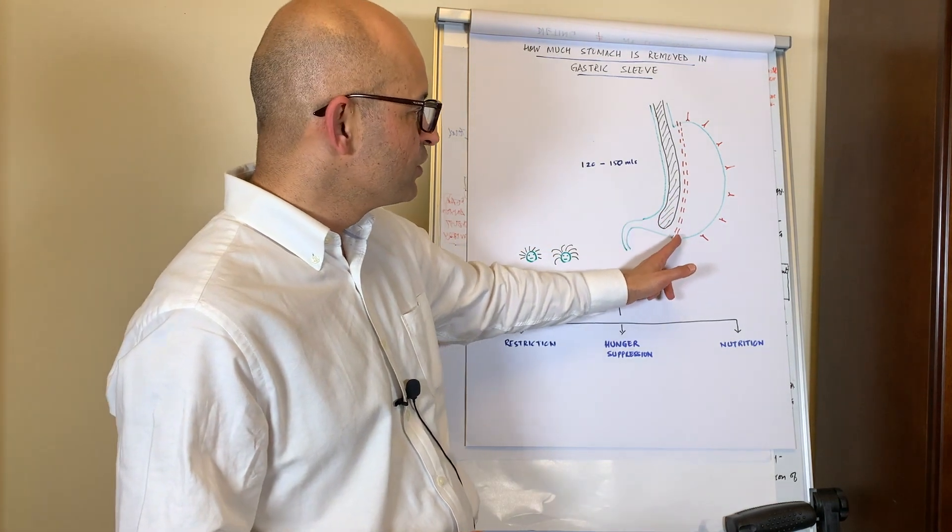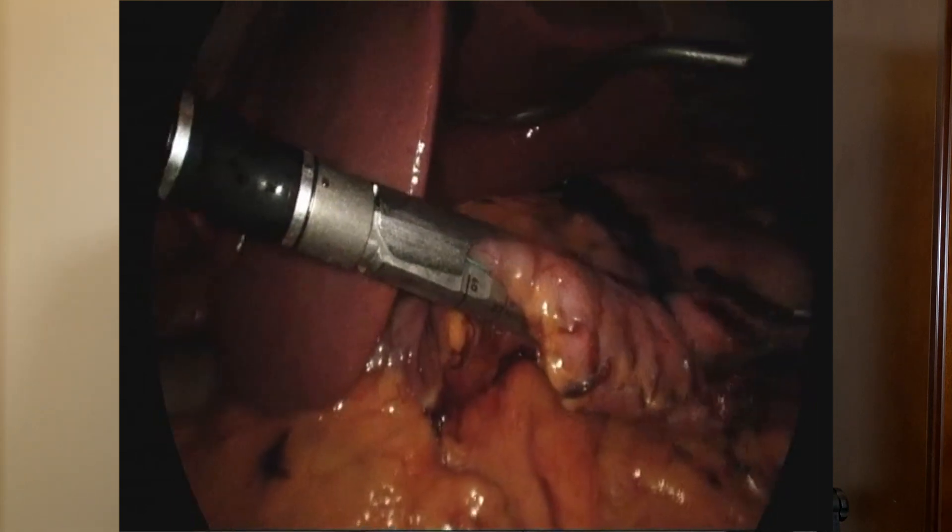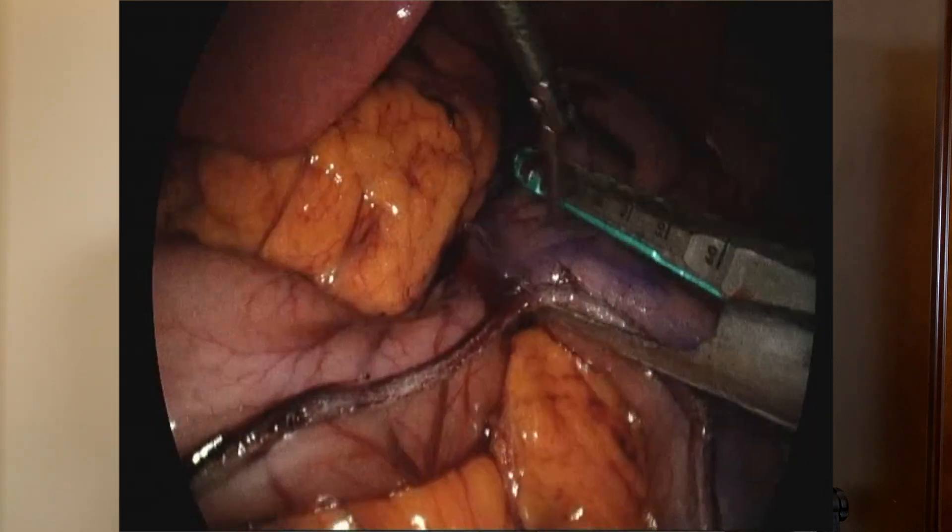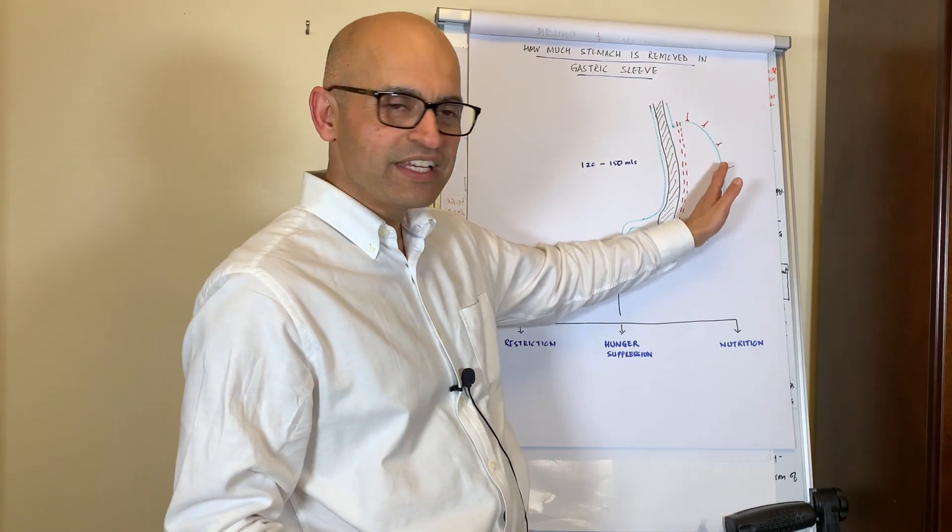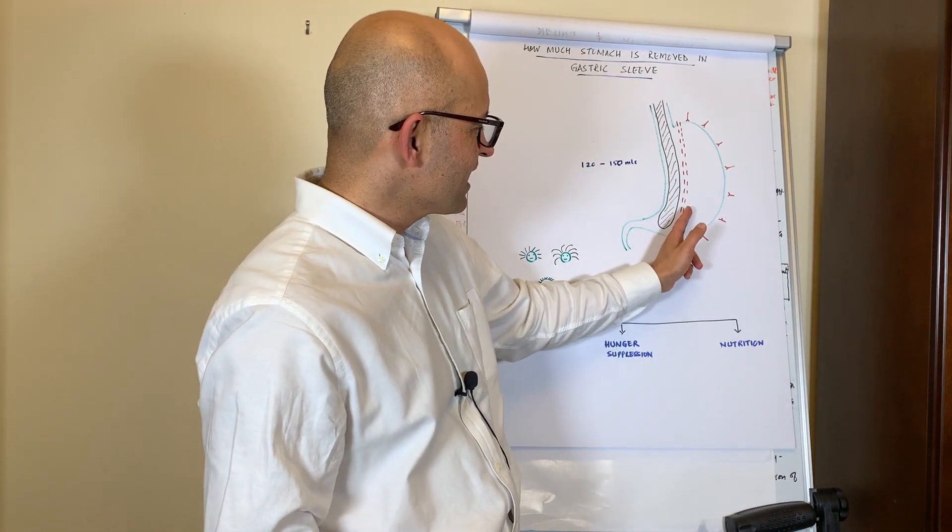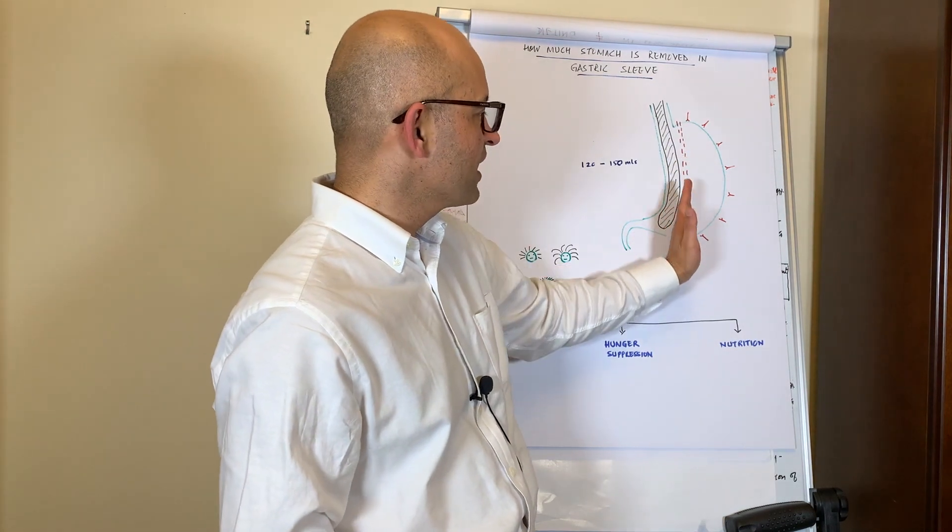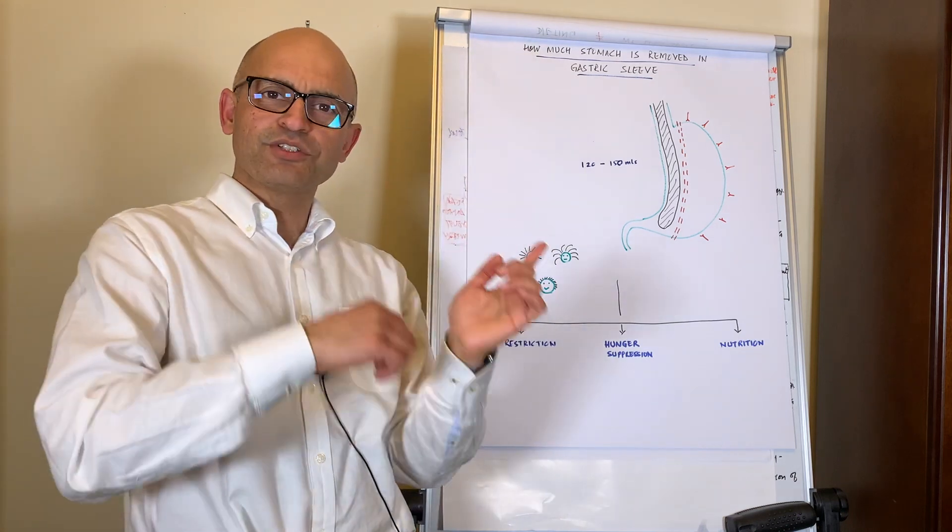Then we use this special stapling device. The stapling device not only seals the sides but then cuts in the middle as well. So it's a very important crucial part where the stomach that once it is freed up, it essentially is cut all along that line just outside the bougie or the calibration tube.